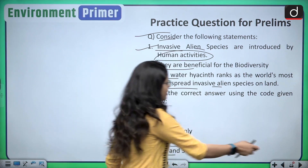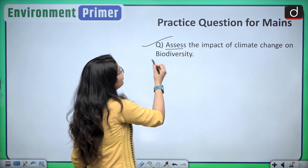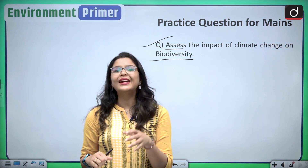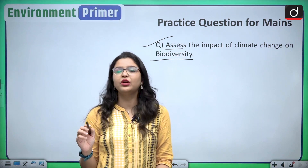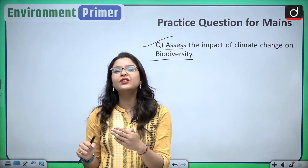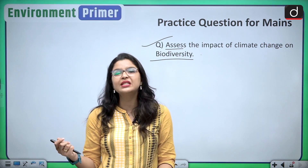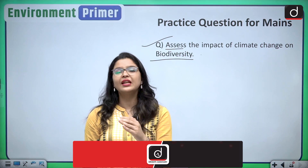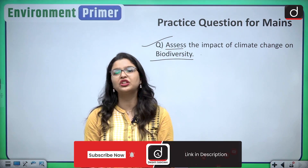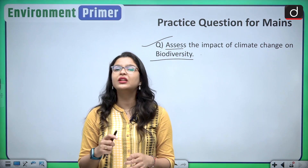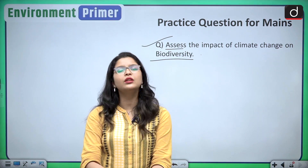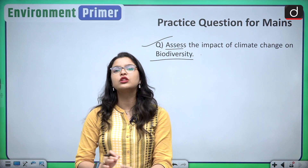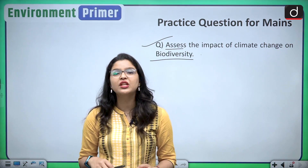For your mains examination, the practice question is: assess the impact of climate change on biodiversity. In your answer, write about what biodiversity is, explain climate change, and state that climate change is the single biggest threat to biodiversity. Write about the climate change impact on invasive alien species, what these species are, and how they lead to depletion of biodiversity. Conclude holistically that countries need to come forward and develop an action plan for minimizing the threats caused by invasive species as well as climate change on global biodiversity.